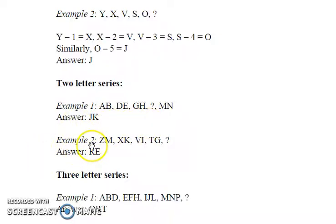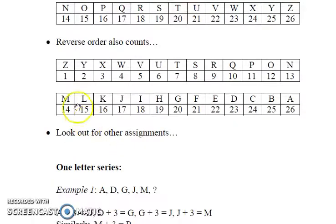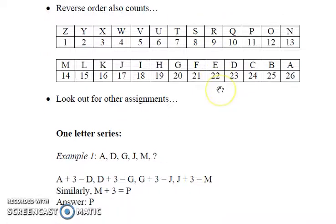In the next example, we see that the term follows a pattern which is easily visible from here, this reverse order assignment. Here, Z is paired with M, X with K, V with I, T with G and therefore R must be paired with letter E.